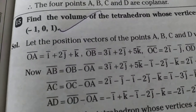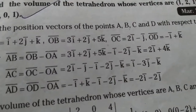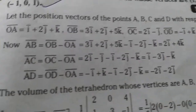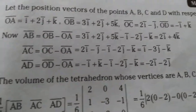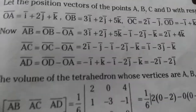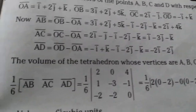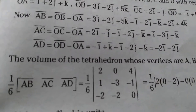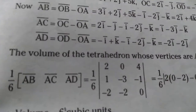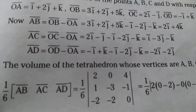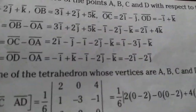Next problem: find the volume of the tetrahedron whose vertices are given. To find the volume of a tetrahedron, we need the position vectors. We find vectors AB̄, AC̄, and AD̄ using: AB̄ = OB̄ - OĀ, AC̄ = OC̄ - OĀ, AD̄ = OD̄ - OĀ.